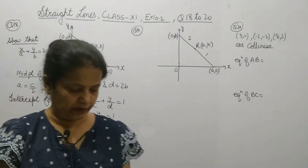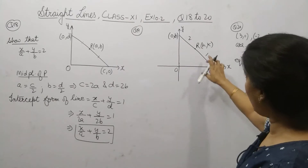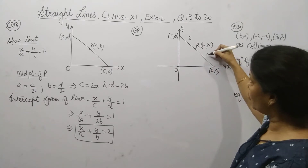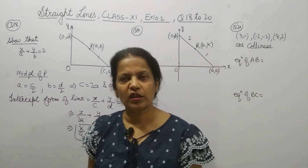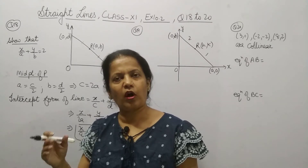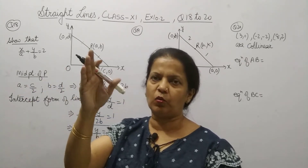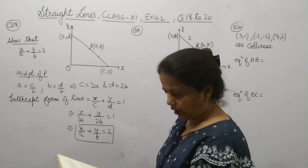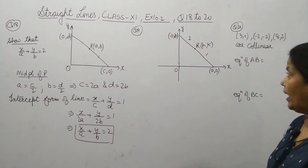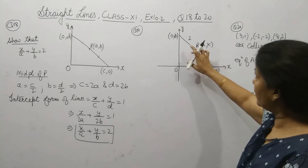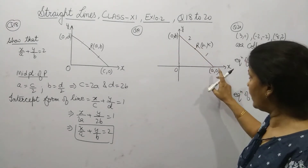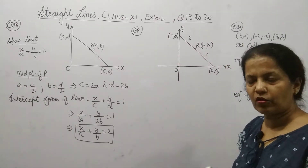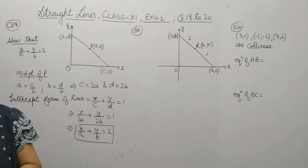Now question number 19. Question 19 is: the point R divides the line segment between the axes in the ratio 1 : 2. Whenever a ratio concept in this chapter comes, you will always take the ratio from the x-axis towards the y-axis, so we take it as 1 : 2. The question is to find the equation of the line. R has coordinates (h, k), so we will find out the values of h and k first.